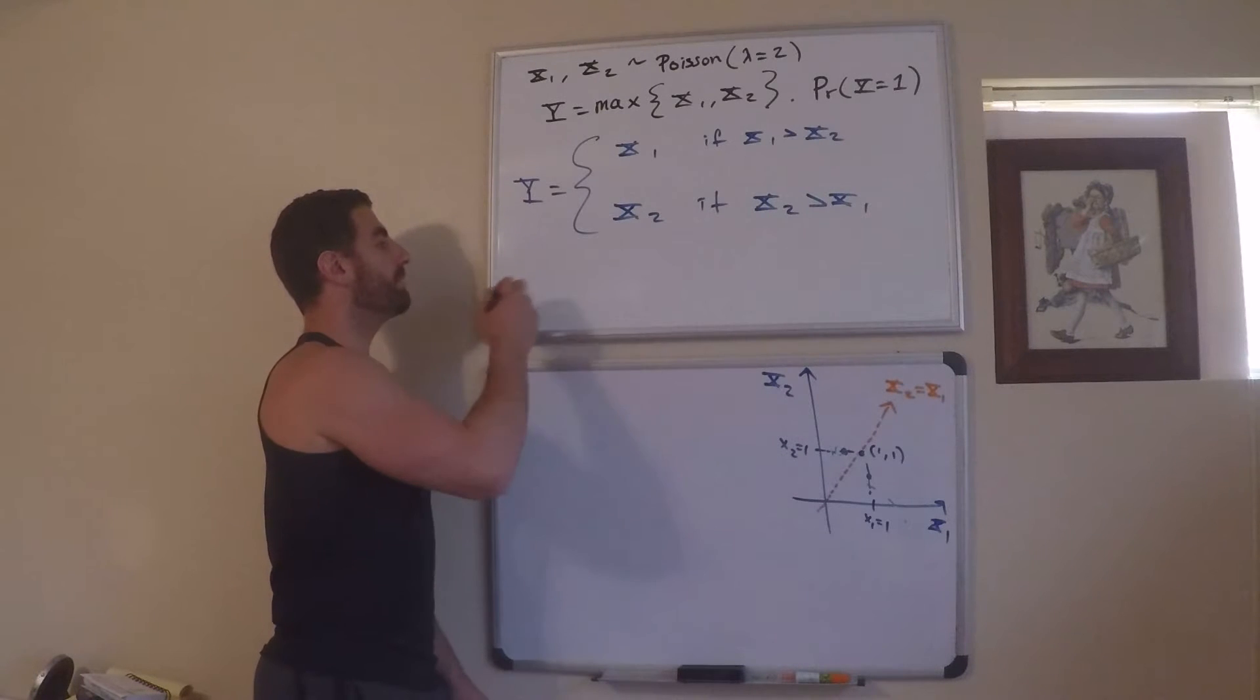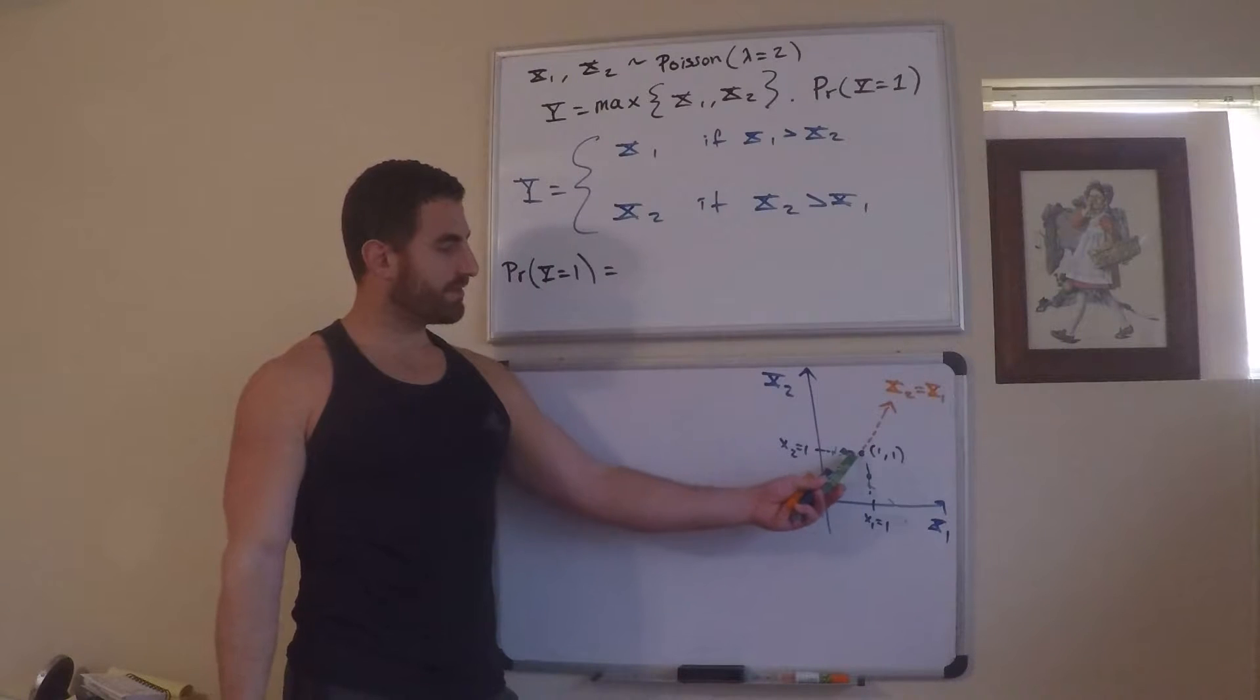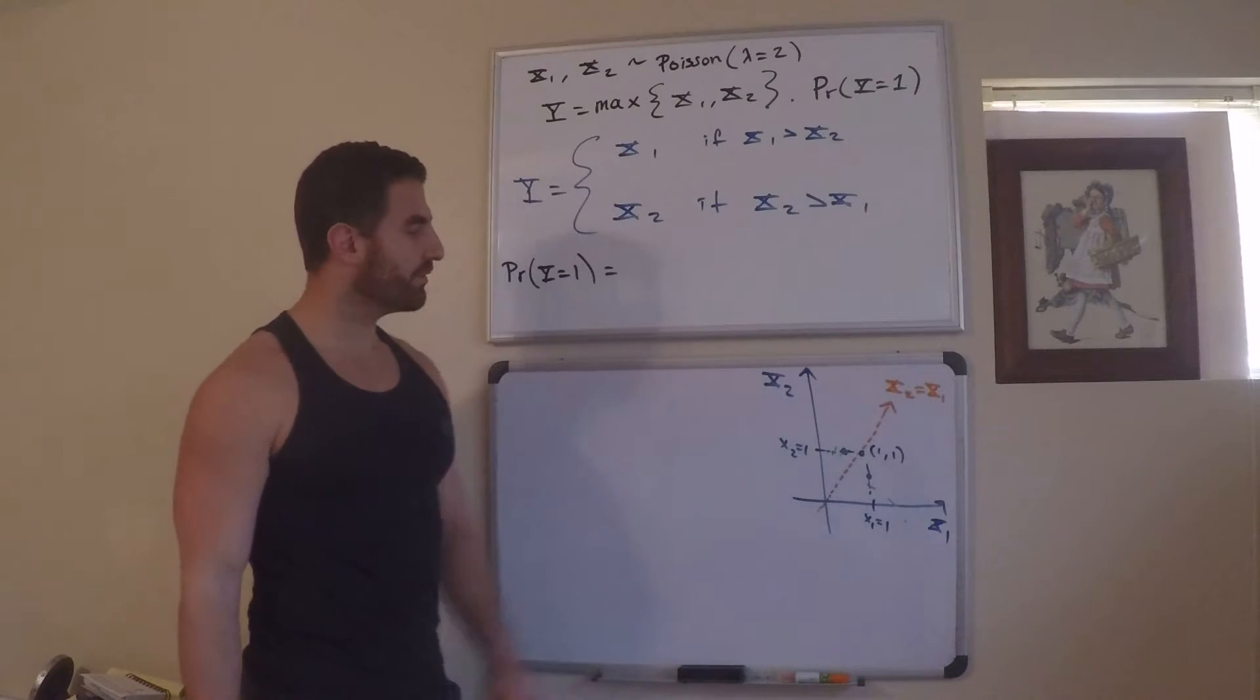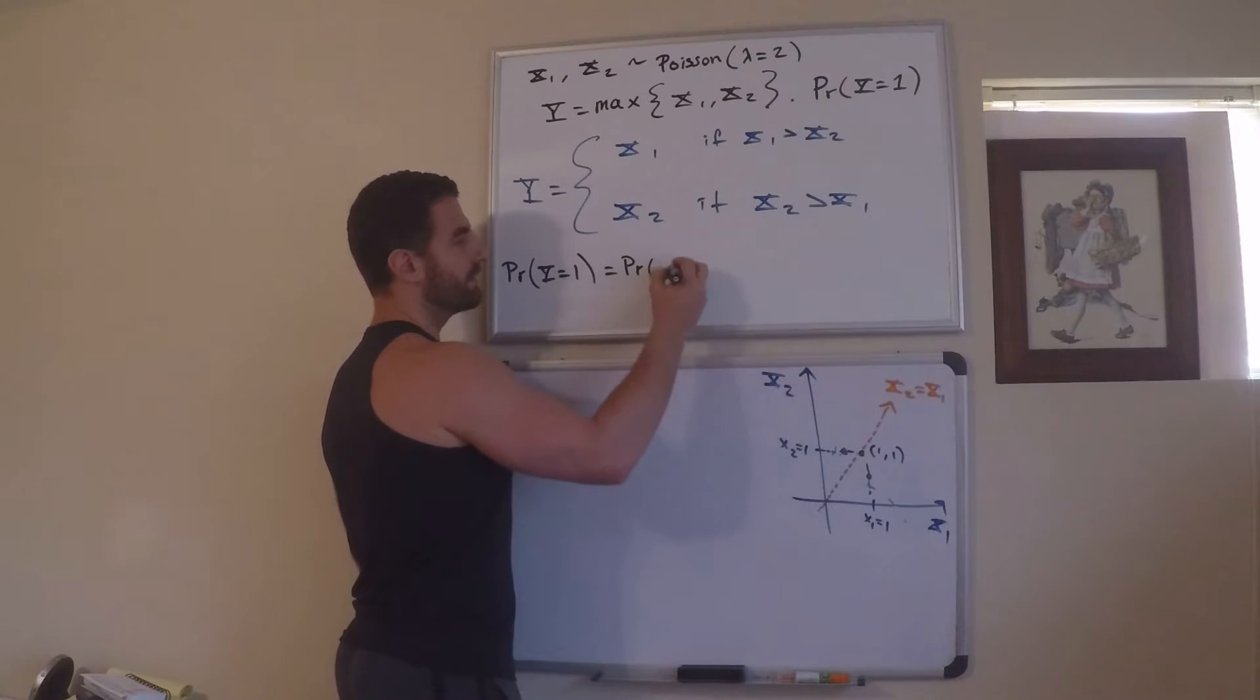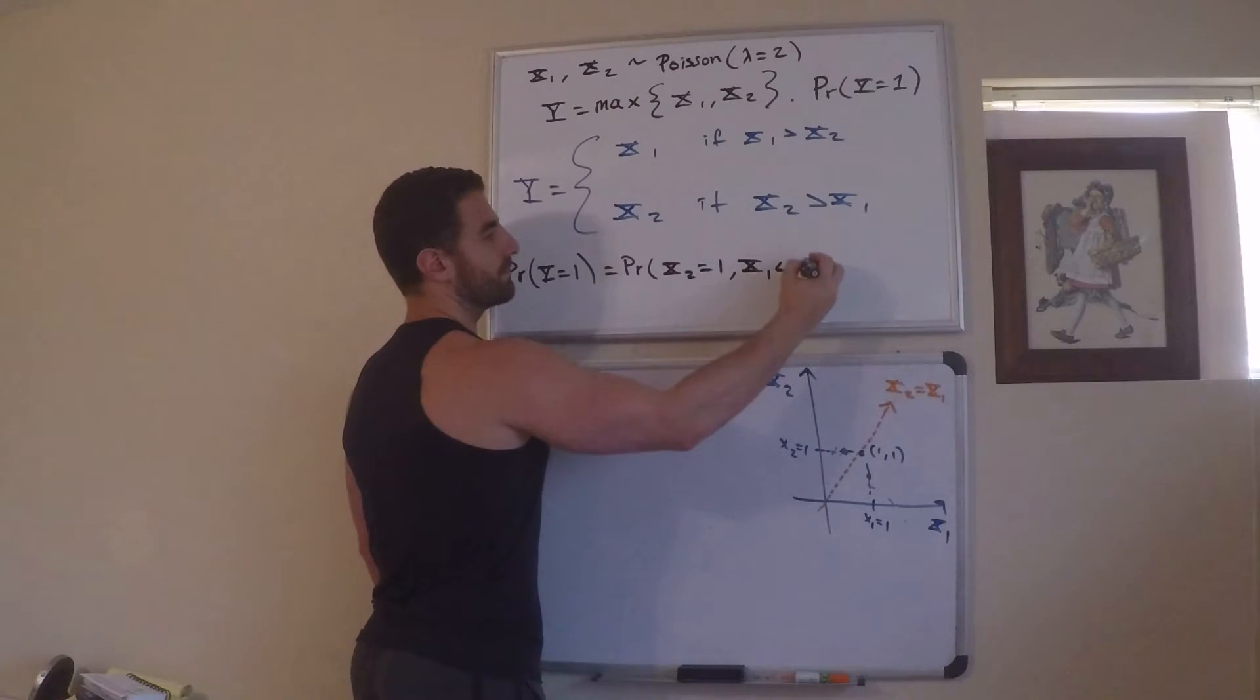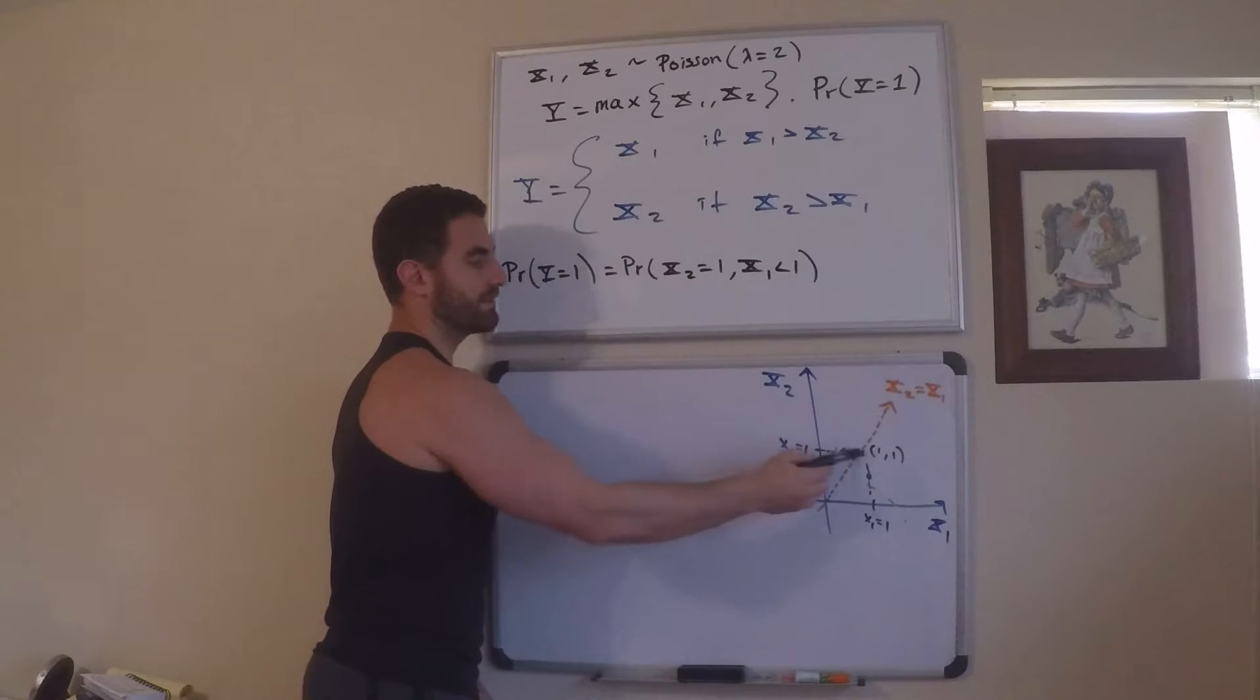So, if I write that out using the correct notation for probability, what is that going to look like? If I want the probability that y is equal to 1, let's just write out exactly what I just said. If I first consider this line where x2 equals 1. Alright, well, the orange line is where they're equal. This over here that I mentioned before is where x2 equals 1 and x1 is less than 1. So, this is the probability where x2 is equal to 1 and x1 is less than 1. Okay, again, that takes care of this piece right here, this line, this horizontal line.